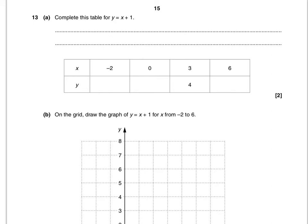Because what you do is you replace x in the equation here by 3. So 3 add 1 is 4. So that's what we're going to do with minus 2, 0 and 6.